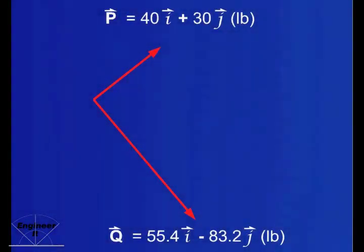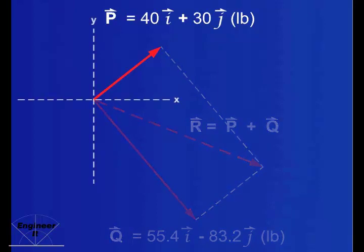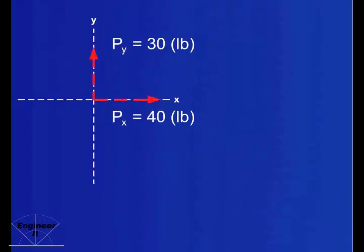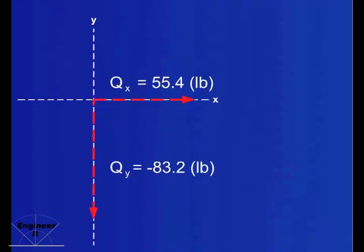Let's assign a coordinate system to vectors P and Q and express them in vector notation. We can then investigate R as their algebraic sum. The components of P are 40 pounds in the x direction and 30 pounds in the y direction, and the components of Q are 55.4 pounds in the x direction and 83.2 pounds in the negative y direction.